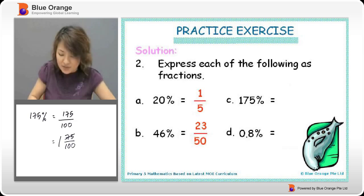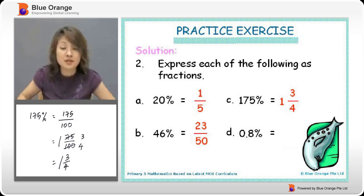And can we reduce 75 over 100? Yes. Divide by 25, it gives you 3. By 25, it gives you 4. So this is 1 and 3 quarter.